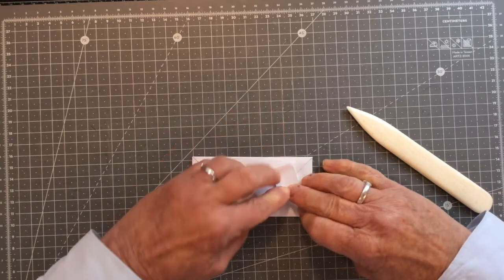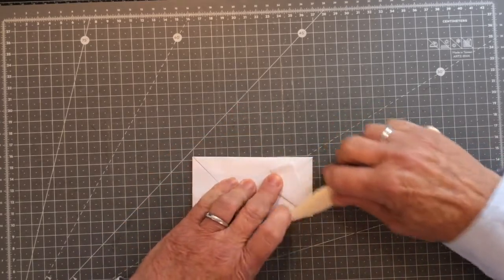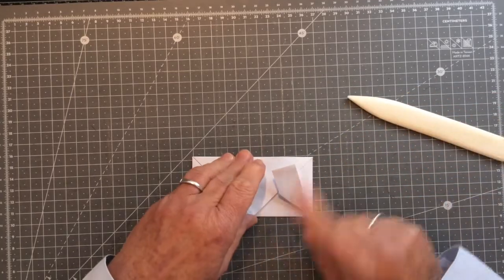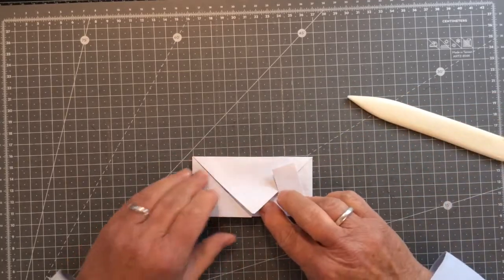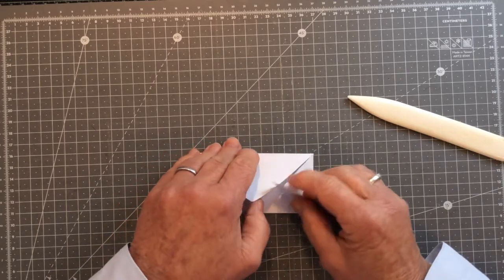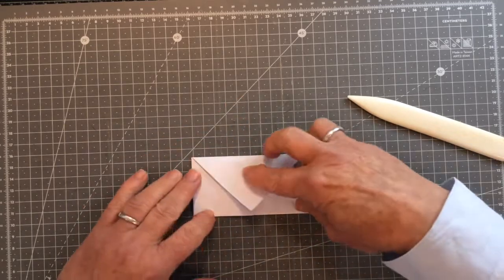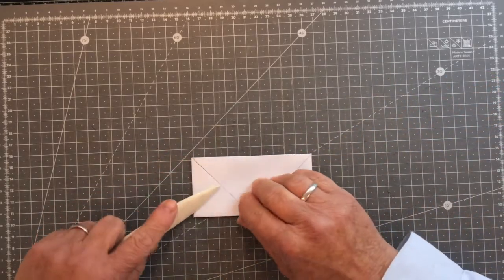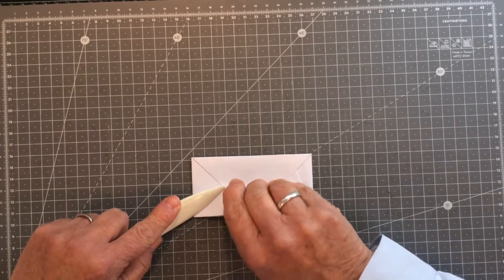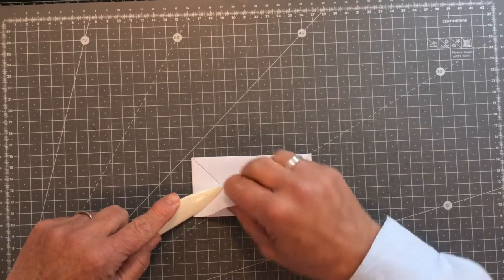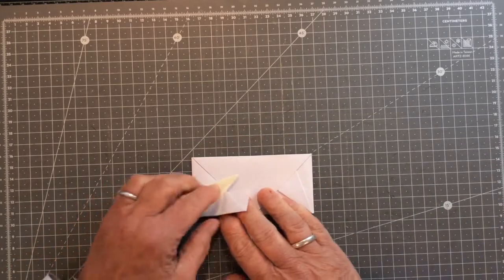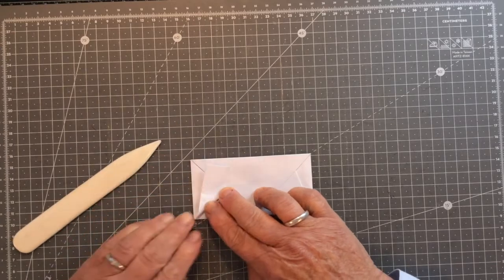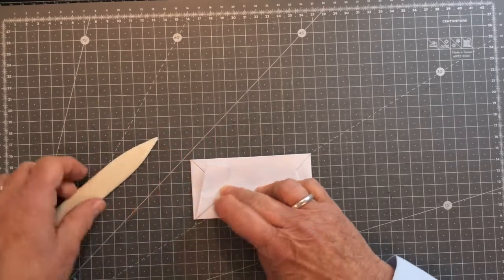and then squeeze that crease into place like so okay so you've done it on one side so you now need to do it on the other side so what I suggest you do is you just tuck that one underneath like so and do the same with your preferred method on the other side so I'm just going to look to see where that join is and it's there and then I'm just going to make my crease